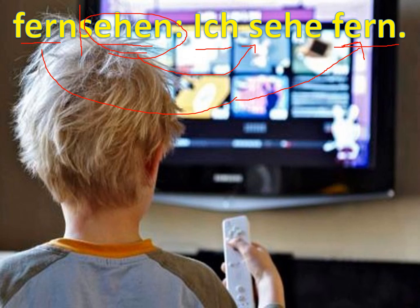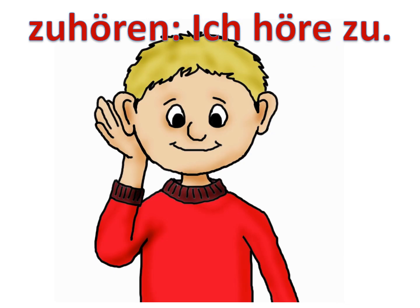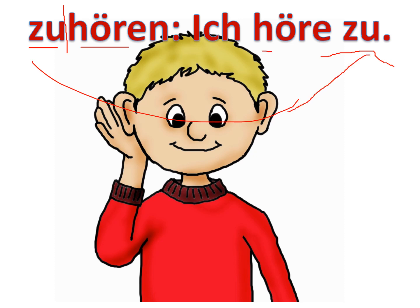Zuhören means 'to listen.' Here you again divide after 'zu,' which leaves you with 'zu' and 'hören.' 'Zu' goes at the very end of the sentence as it is, and 'hören' needs to be conjugated according to the personal pronoun or the speaker of the sentence. For example: 'Ich höre zu.'